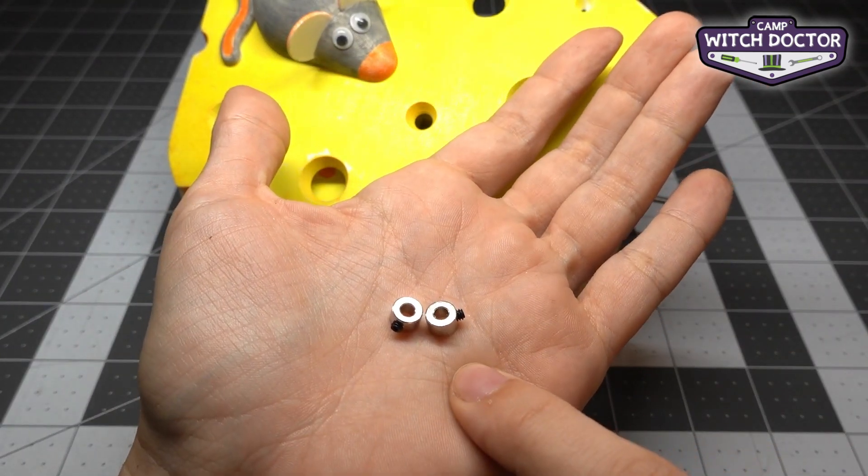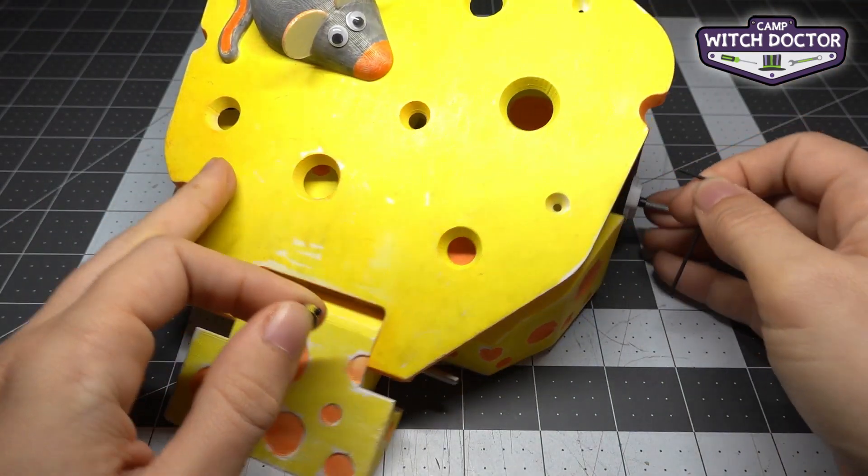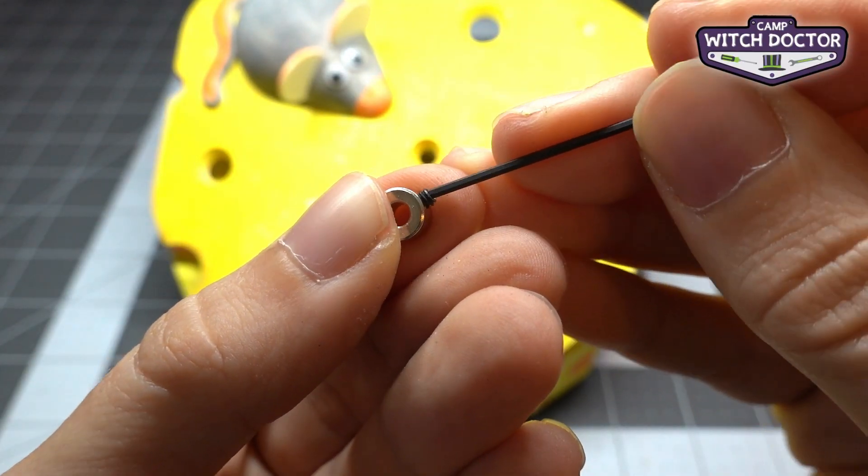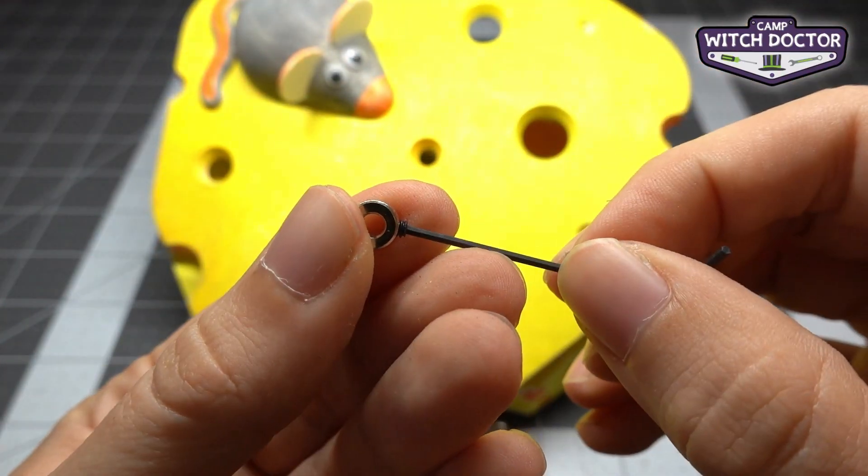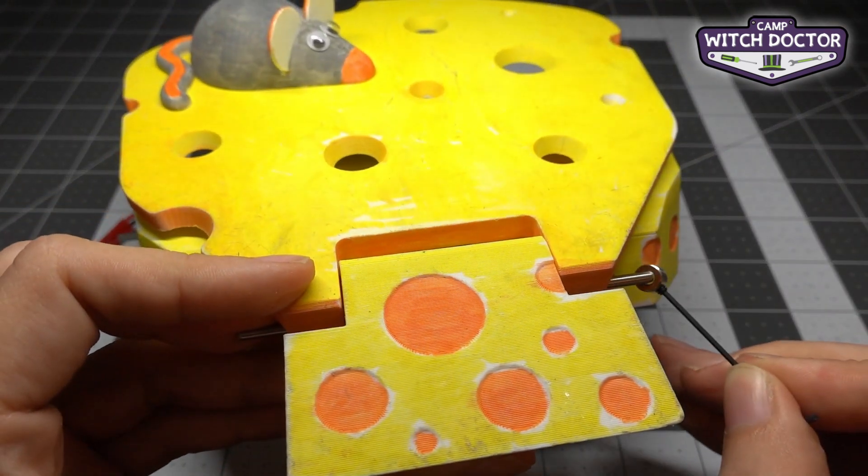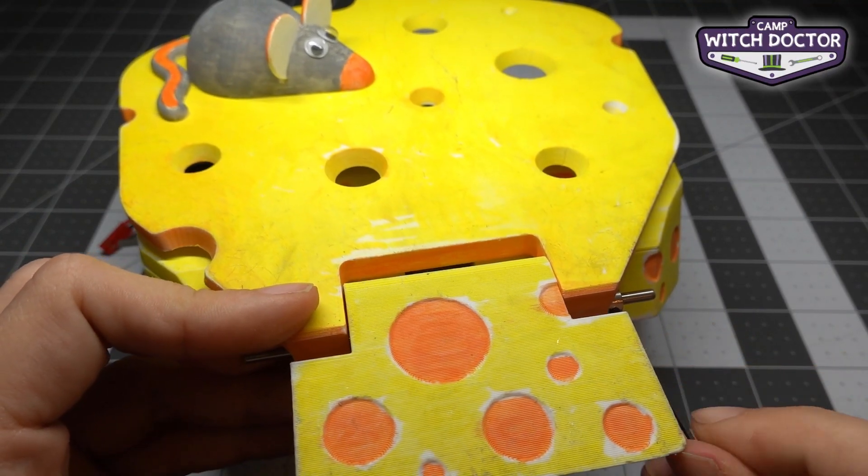Now we're going to use the shaft collars to keep that shaft in place. Each of these shaft collars has a set screw just like the wheels did when we installed those. You're going to use the hex key in that shaft collar set screw and then we'll slide it over the shaft. Remember that if it doesn't slide over easily you might have to loosen the set screw a little bit to install it.